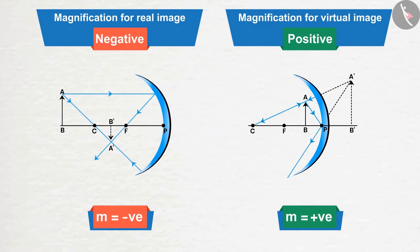If we notice, we will get to know that real images are always inverted, and virtual images are always erect. And we already know the symbols of the inverted and erect images. This is also the reason for the sign of magnification of real and virtual images.